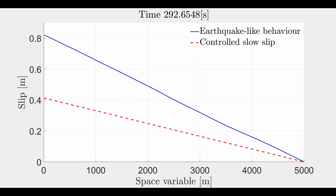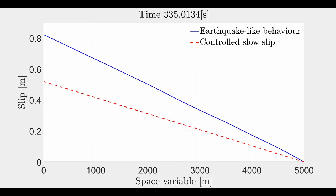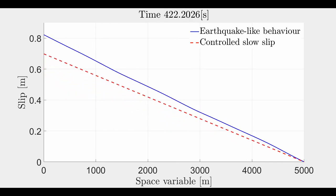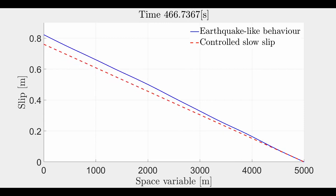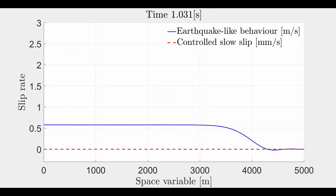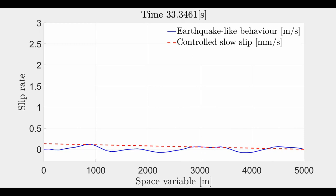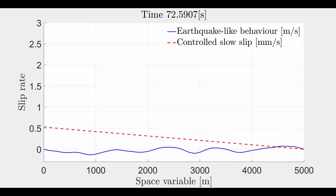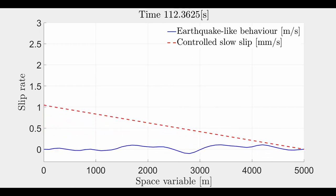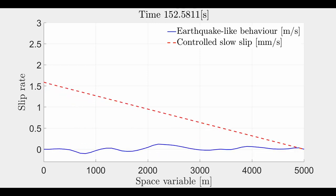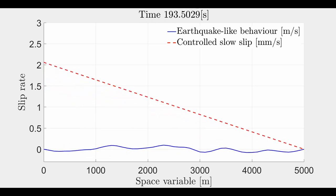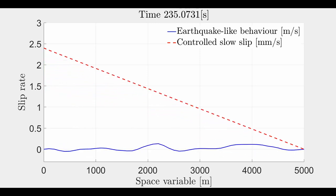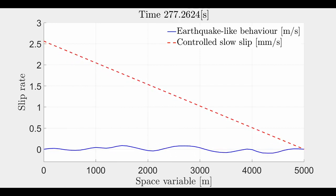The control forces the system solution to follow the designed reference. The difference between these two results is more evident in the velocity where the open loop response is of the order of meters per second and the control response is of the order of millimeters per second.